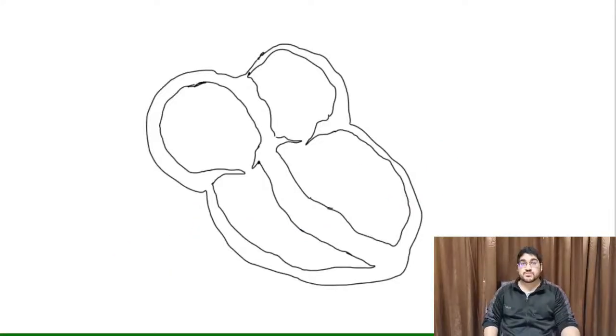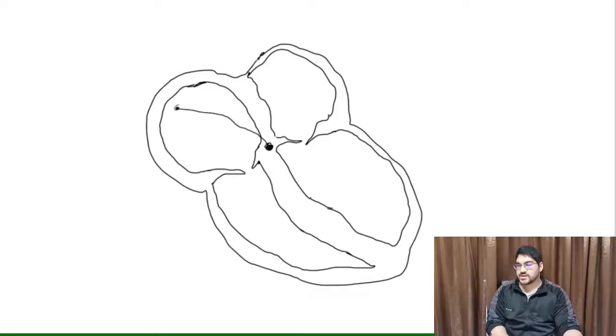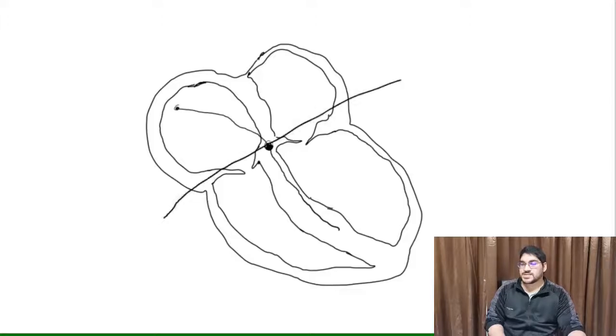First we're going to talk about the short P-R interval. We can call this pre-excitation syndrome, where the ventricles contract too quickly. Usually there's an impulse that goes from the SA node down through the atria towards the AV node, processed by the AV node, then proceeds down through the septum and that's when we get ventricular contraction. The AV node is sort of the rate limiter in this step.